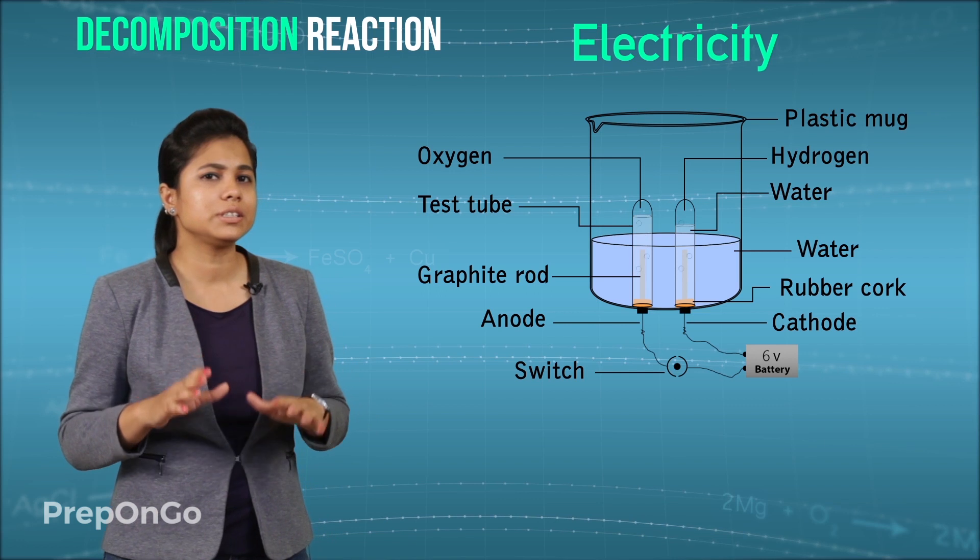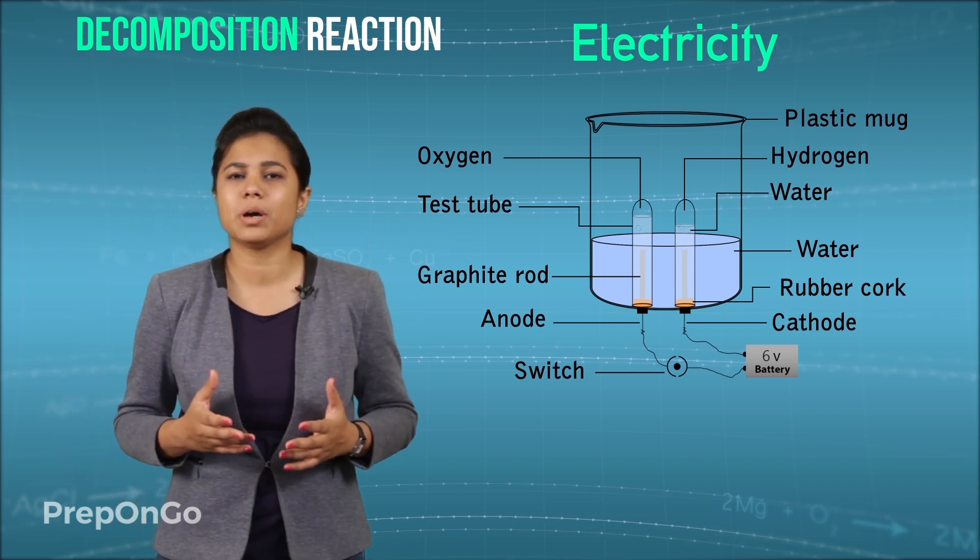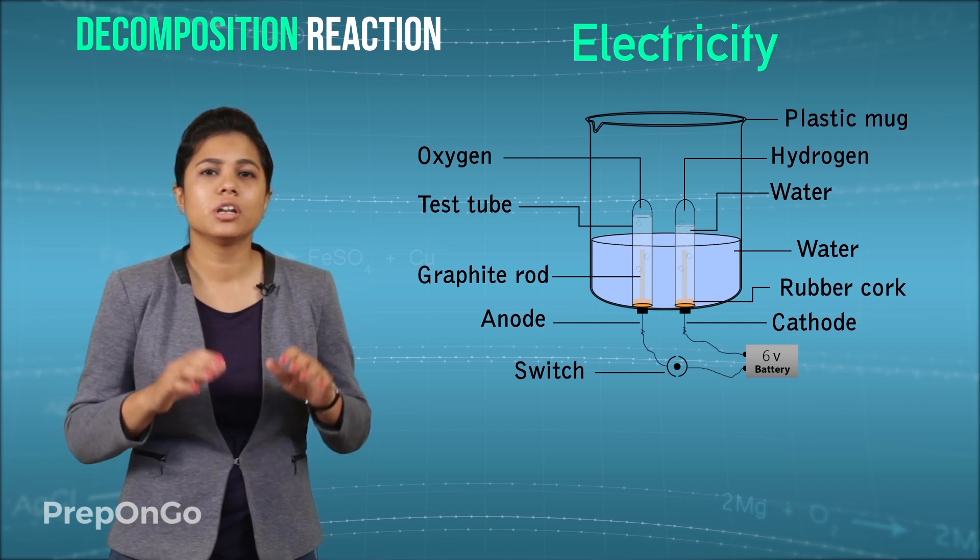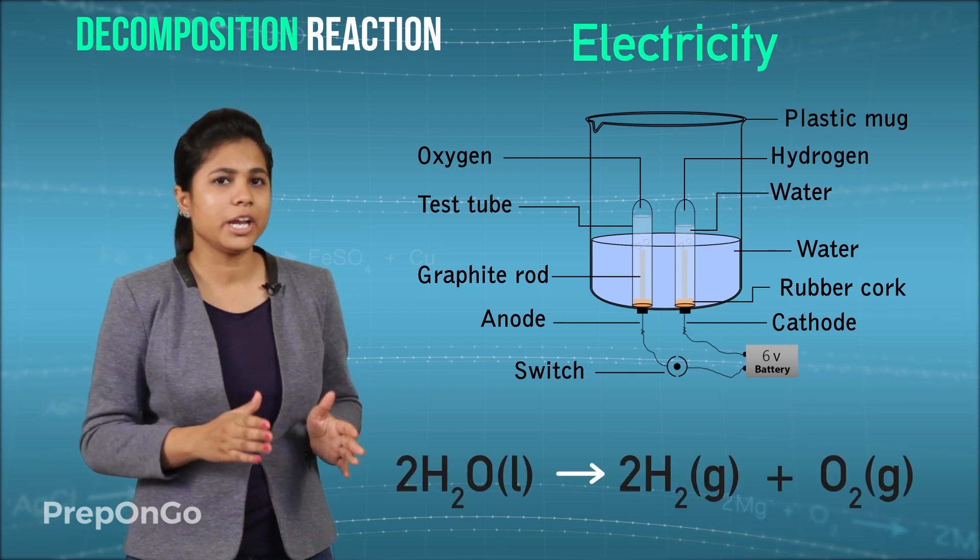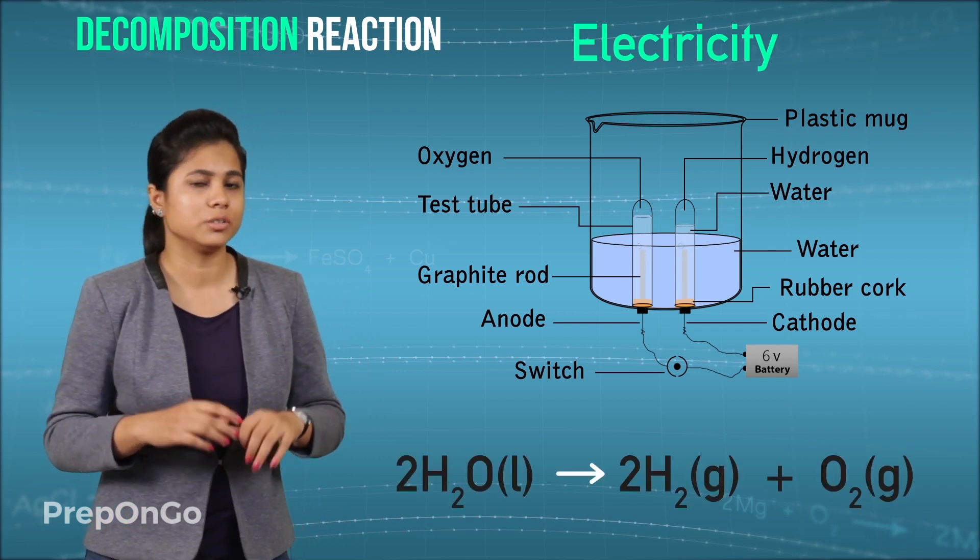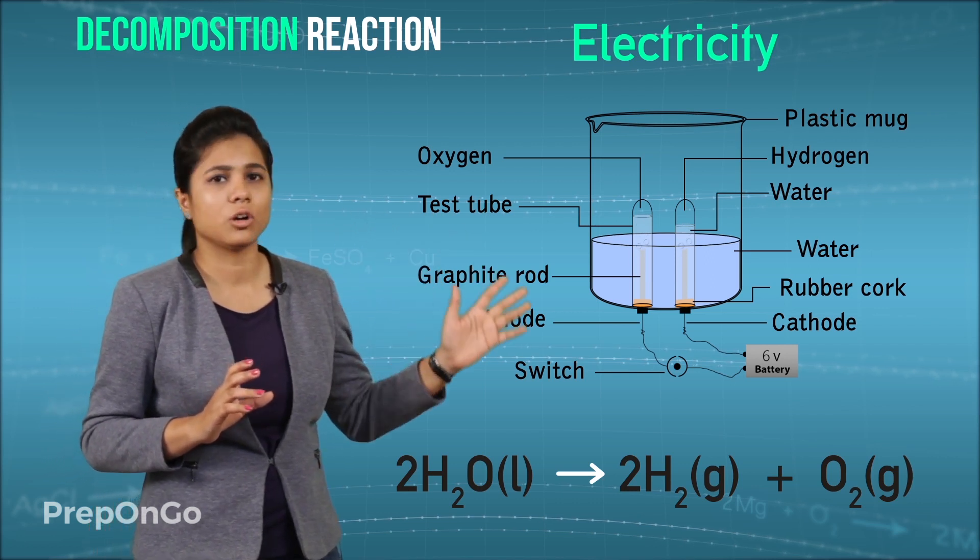Now you will see that there are bubbles in these test tubes. What are these bubbles and how they are formed? We know on passing electricity in water they dissociate into hydrogen and oxygen. So these test tubes must be containing hydrogen and oxygen.